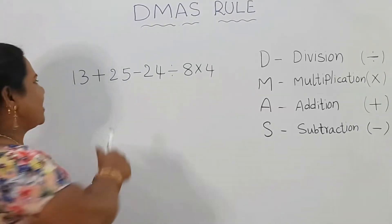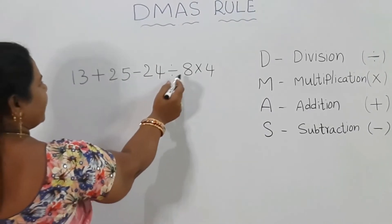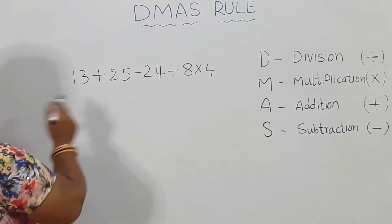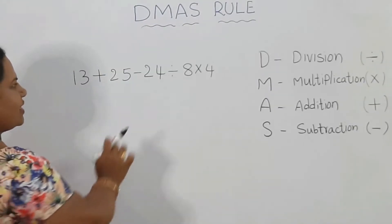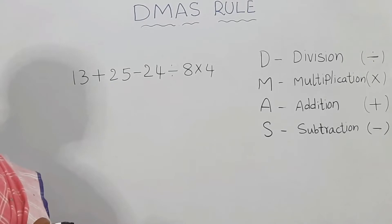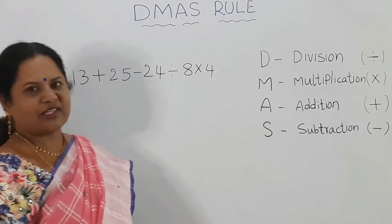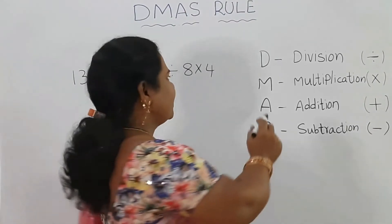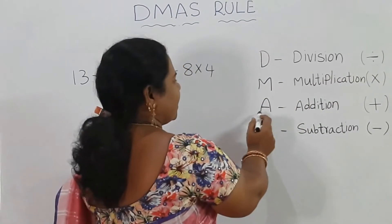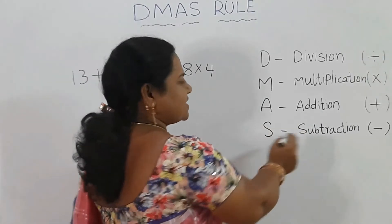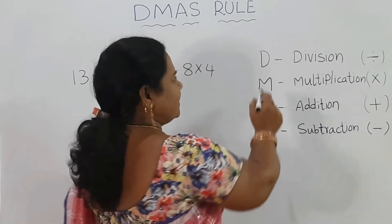Look here. Here we have a problem: 13 plus 25 minus 24 divided by 8 into 4. When we have plus, minus, divide, and multiply together, what operation do we do first? DMAS rule. D stands for division, M stands for multiplication, A stands for addition, S stands for subtraction. So first, D — division first.